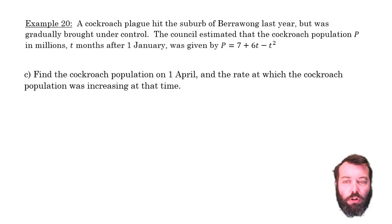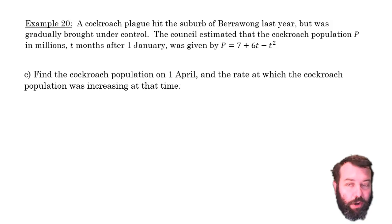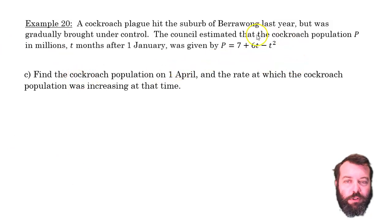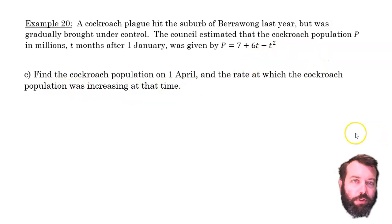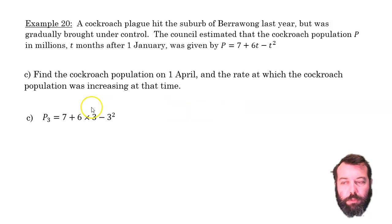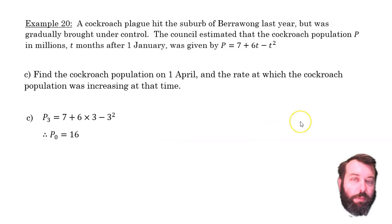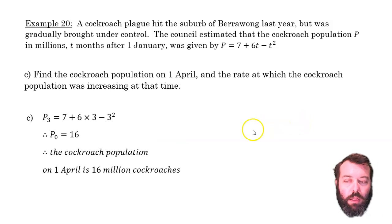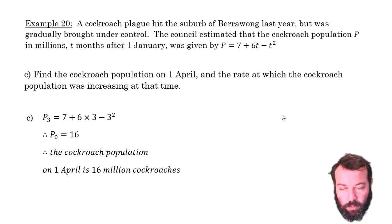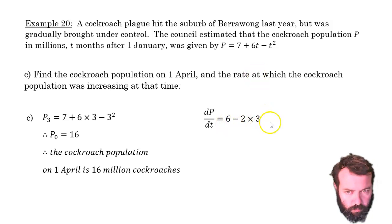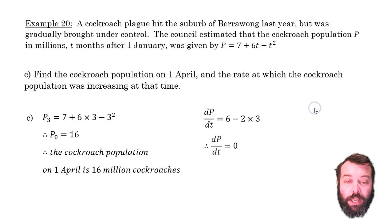Next, find the cockroach population on the 1st of April and the rate at which the population is increasing at that time. Counting along — February, March, April — this is t = 3. To find the population, substitute into the original function. To find the rate of change, substitute into the derivative. When t = 3, the population is 16 million, and the rate of change equals 0.